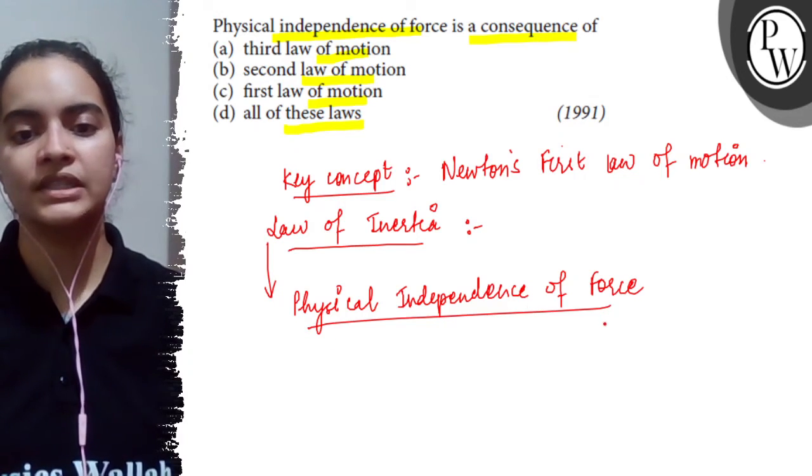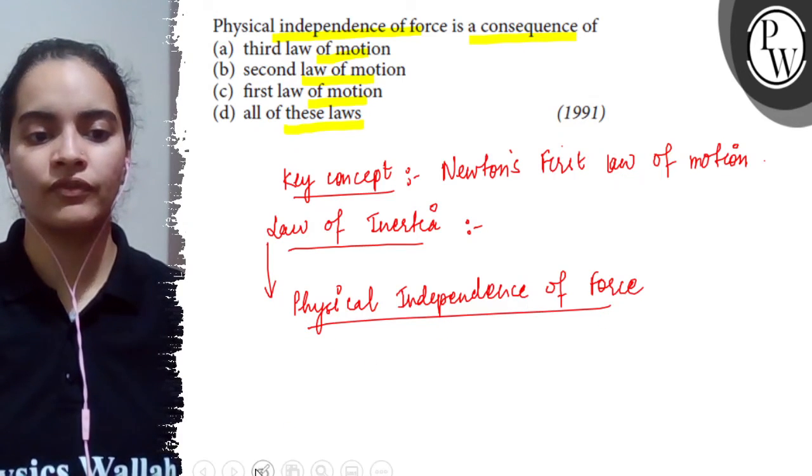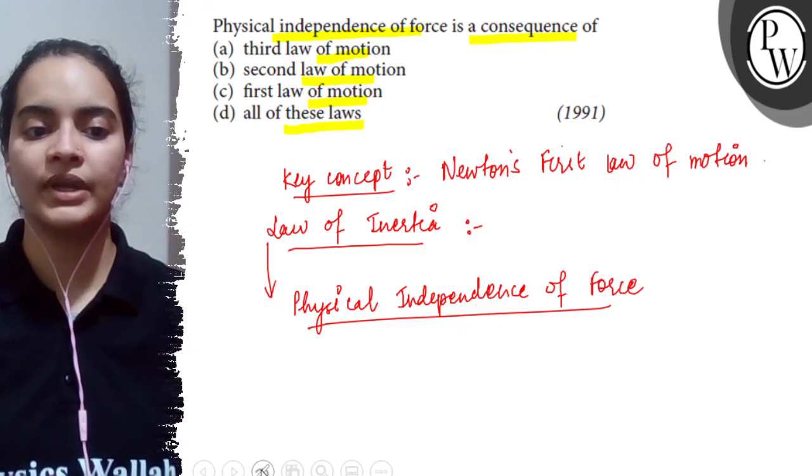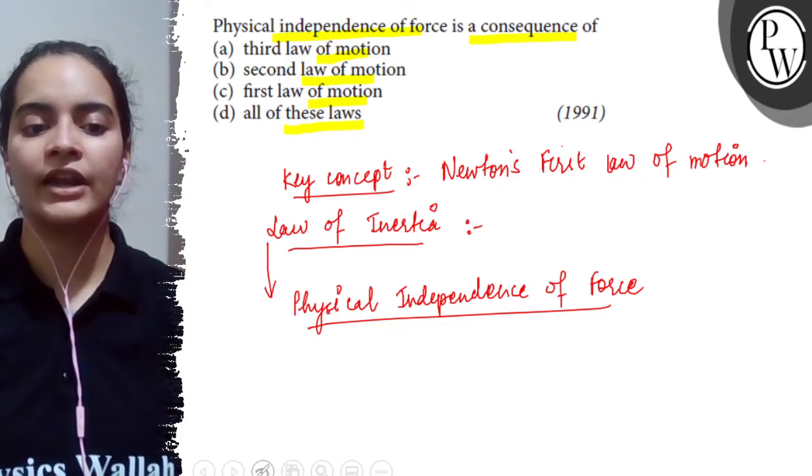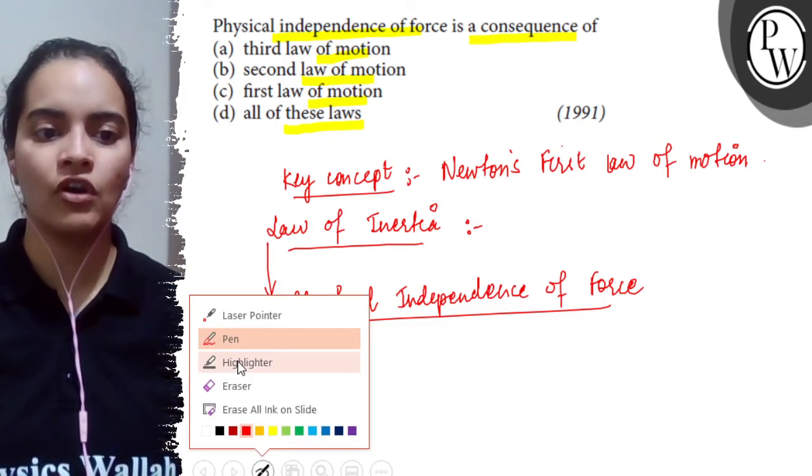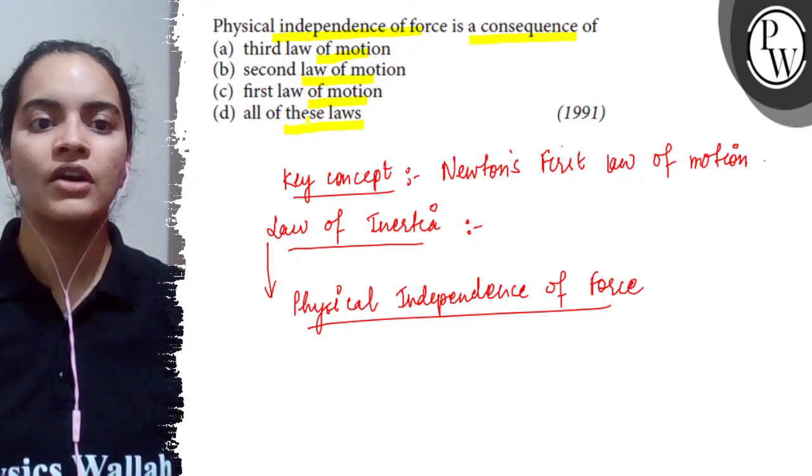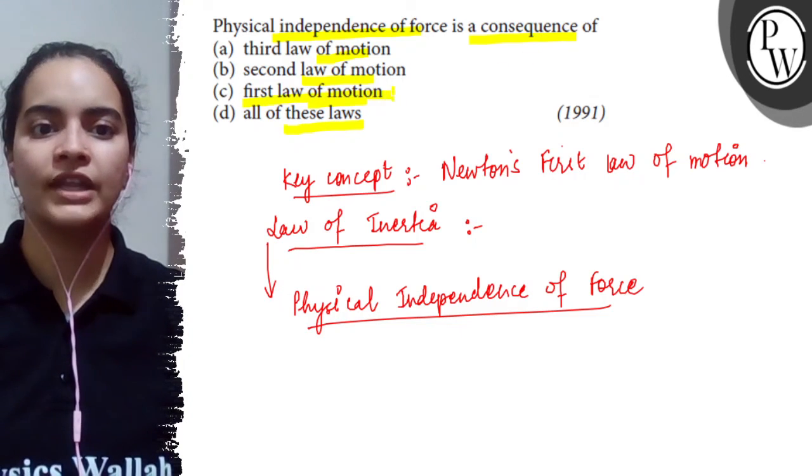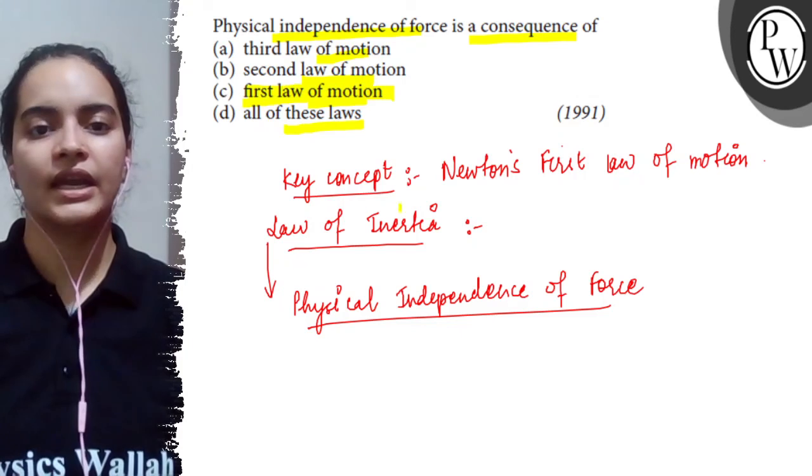Hence, what we can say is that physical independence of force is the direct consequence of law of inertia, and law of inertia is which law of motion? That is first law of motion. So hence option C is the correct answer.